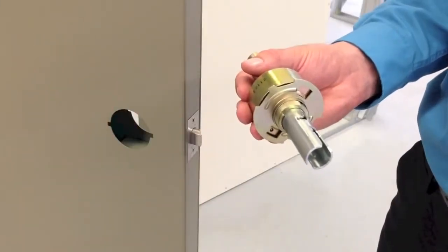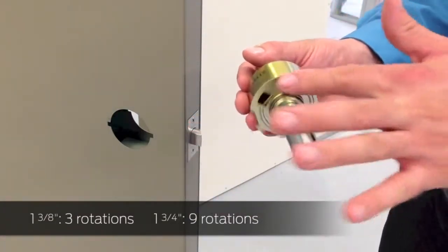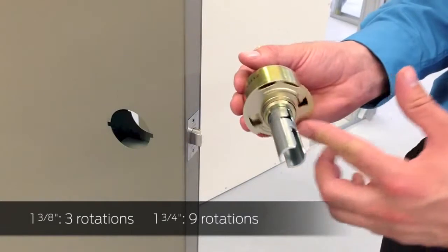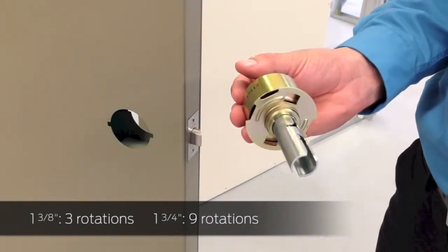Rotate the adjustment plate counter clockwise three full rotations for doors one and three-eighths inches thick and nine full rotations for one and three-quarter. The chassis comes set for one and three-quarter.